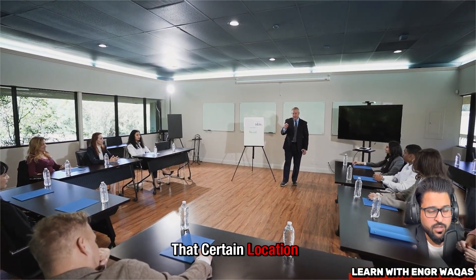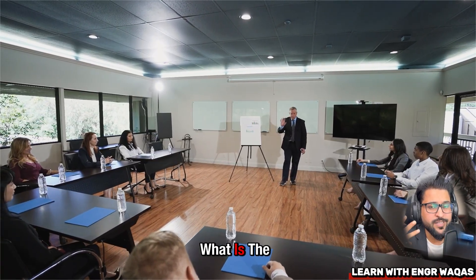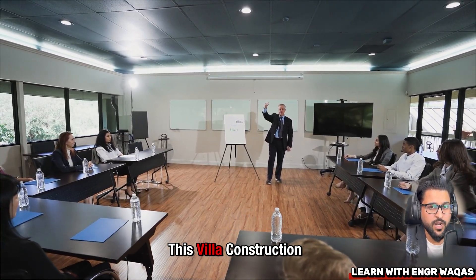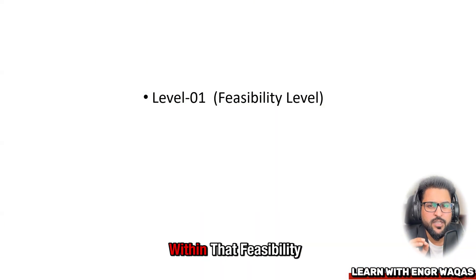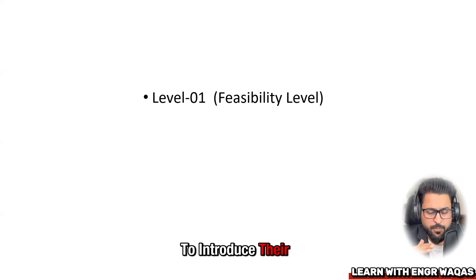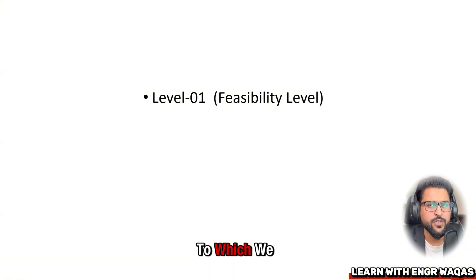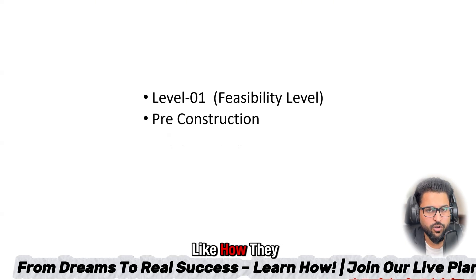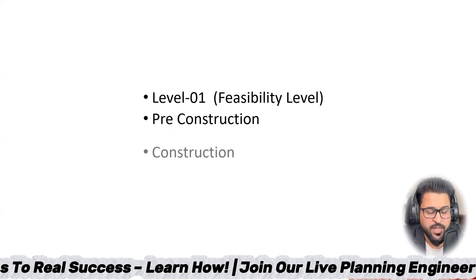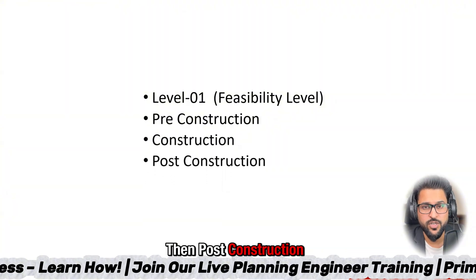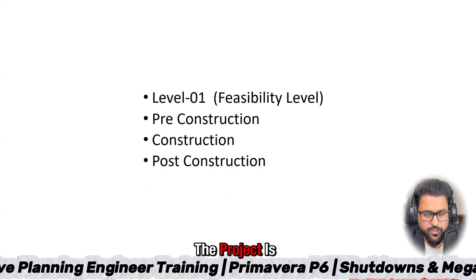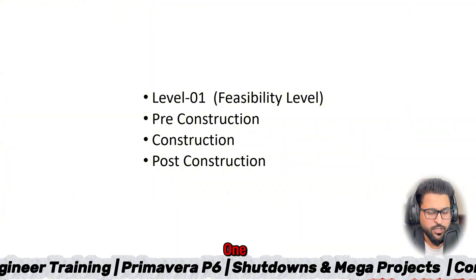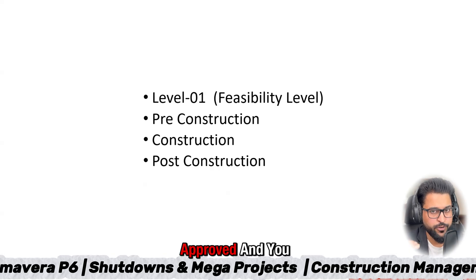Within feasibility for this villa construction project, they discuss the need to construct, why they chose the location, what the future outcomes are, and what revenue and profitability the project will generate. Within that feasibility stage, they introduce a very basic level schedule called Level 1 scheduling: pre-construction, construction, and post-construction after delivery.